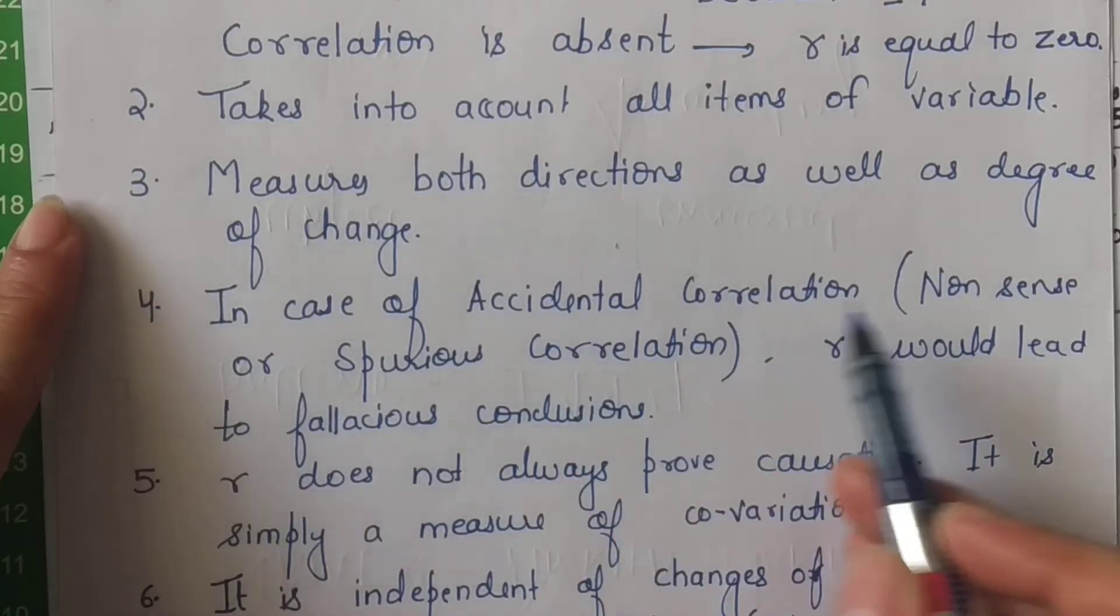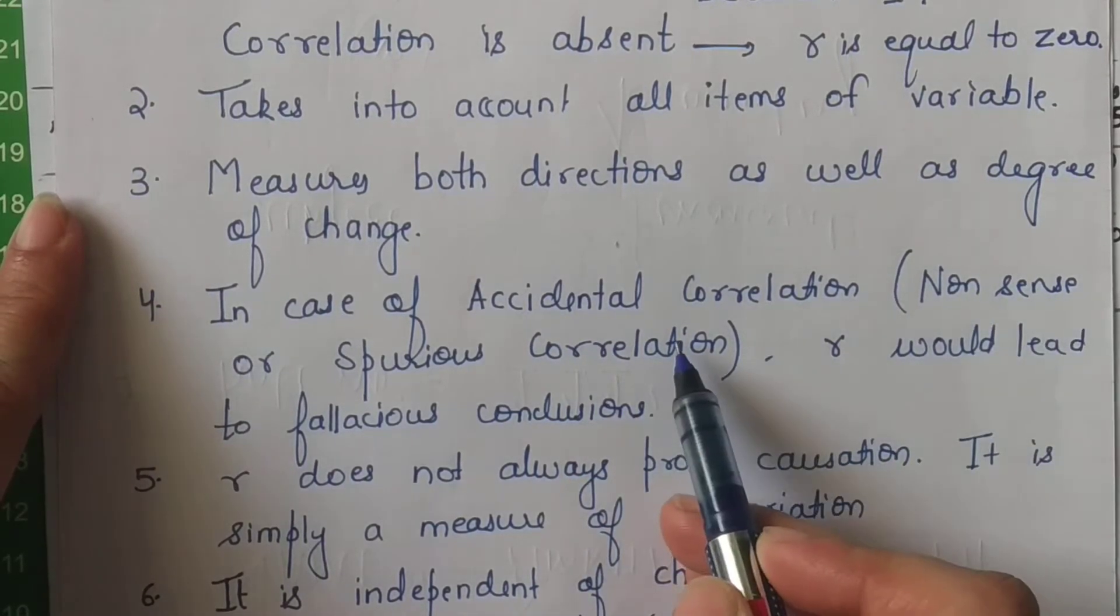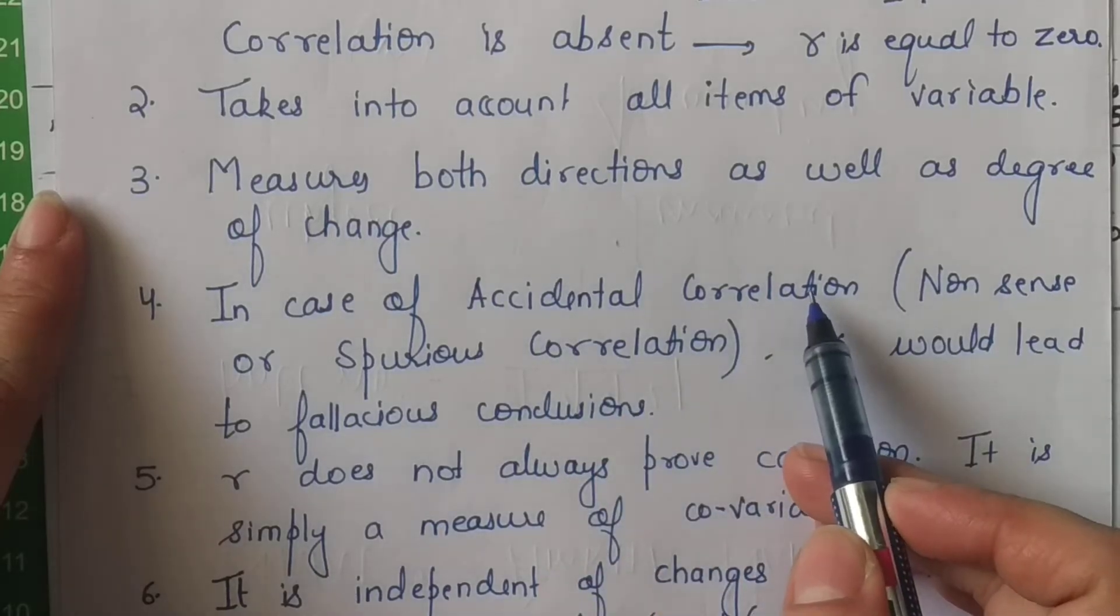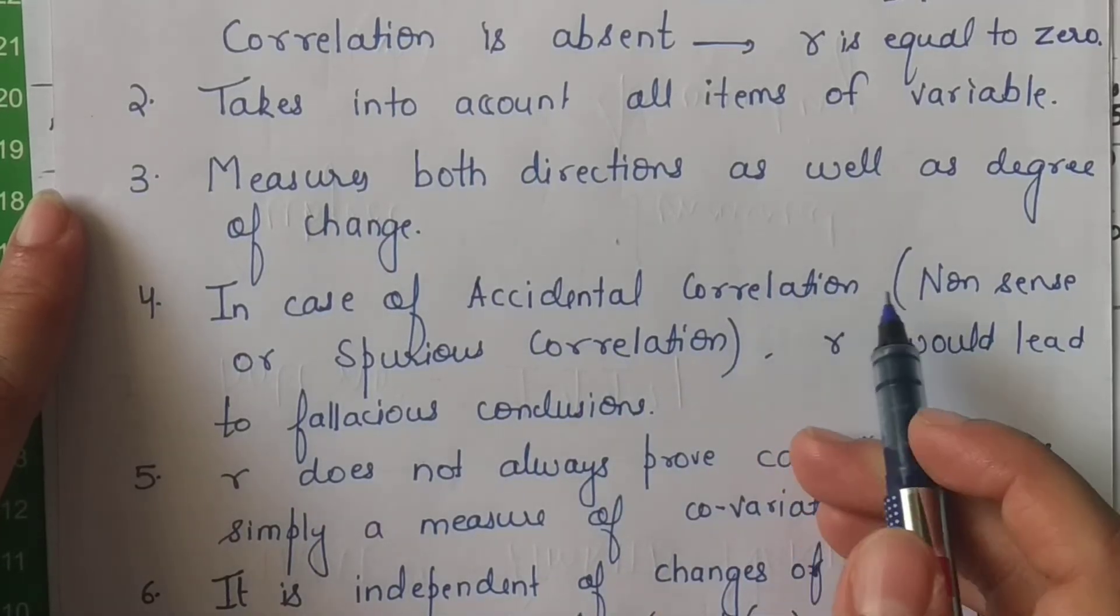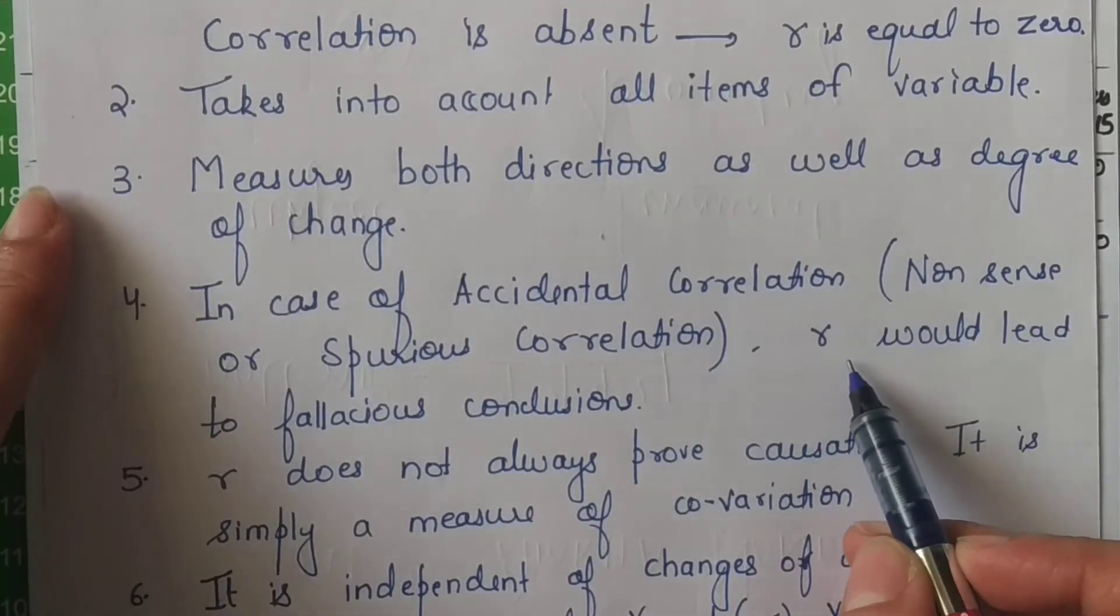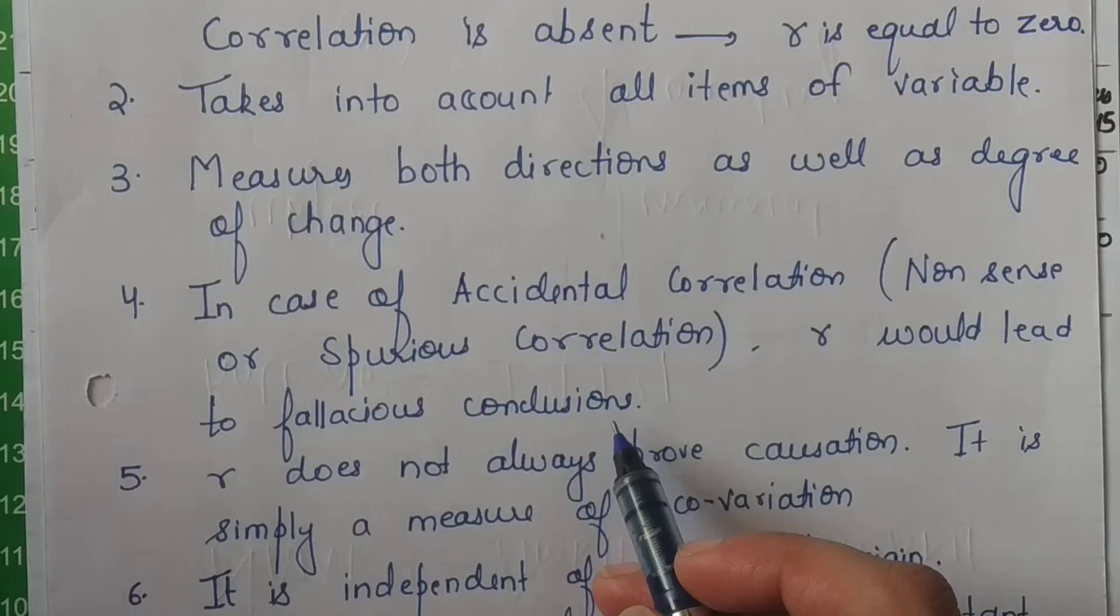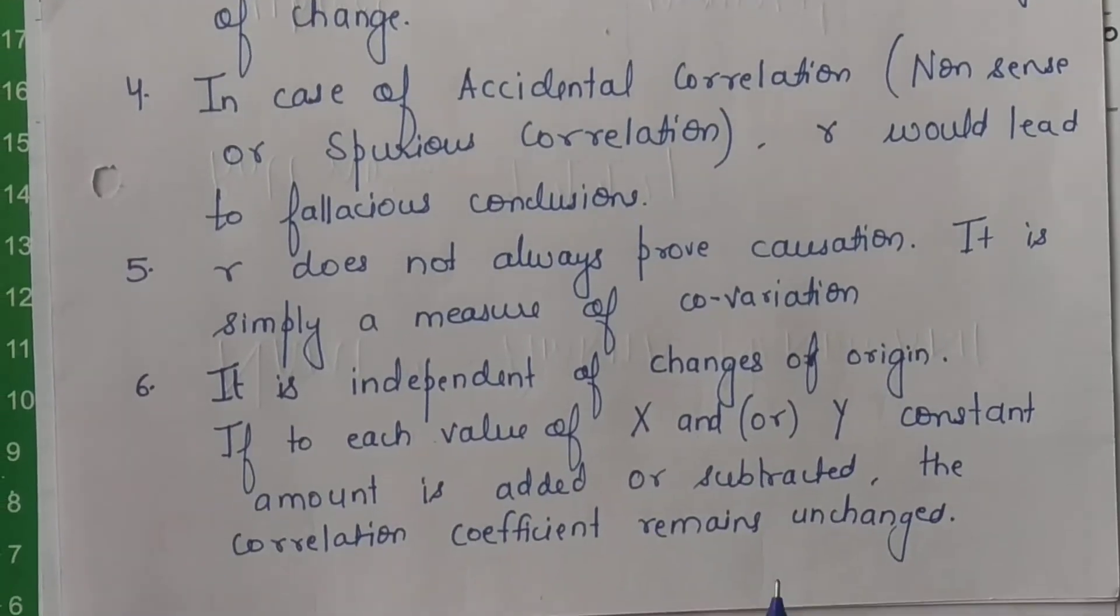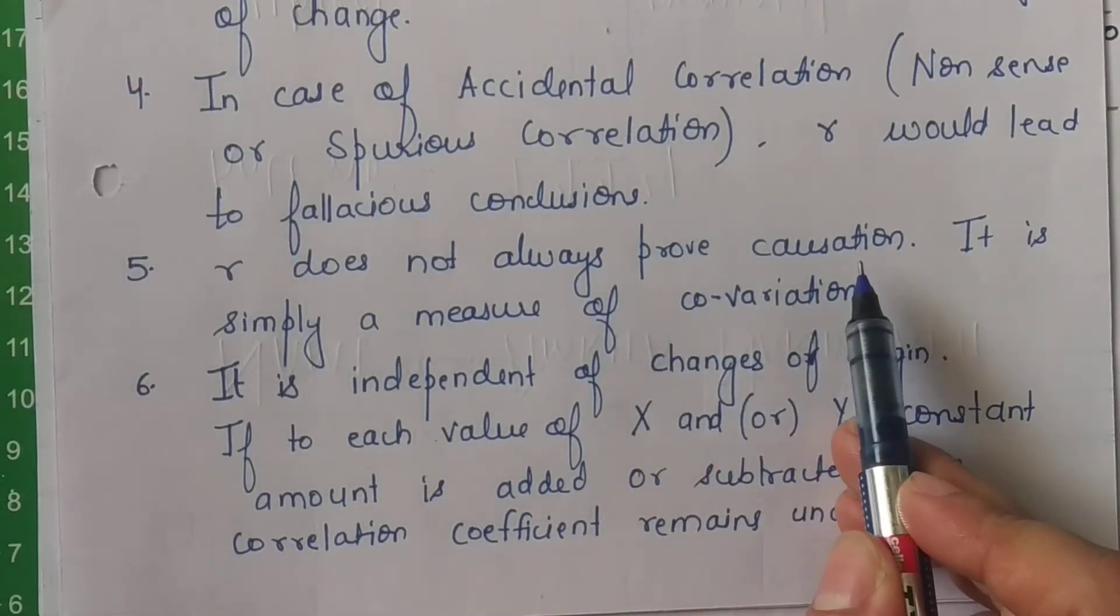But agar main in dono ko saamne rakh ke, zabardasti unko pe formula apply karke nikaal loon, toh kuch na kuch toh r ki value aa hi jayegi. So aap zabardasti jo is spurious ya nonsense correlation nikaal rahi hain, yeh accidental correlation hai jo ki aap kahin pe bhi study kar sakti hain, kisi bhi variables ke beech mein study kar sakti hain. Aur aise variables jo hain, yeh aapko galat conclusions ki taraf hi le kar jayengi.